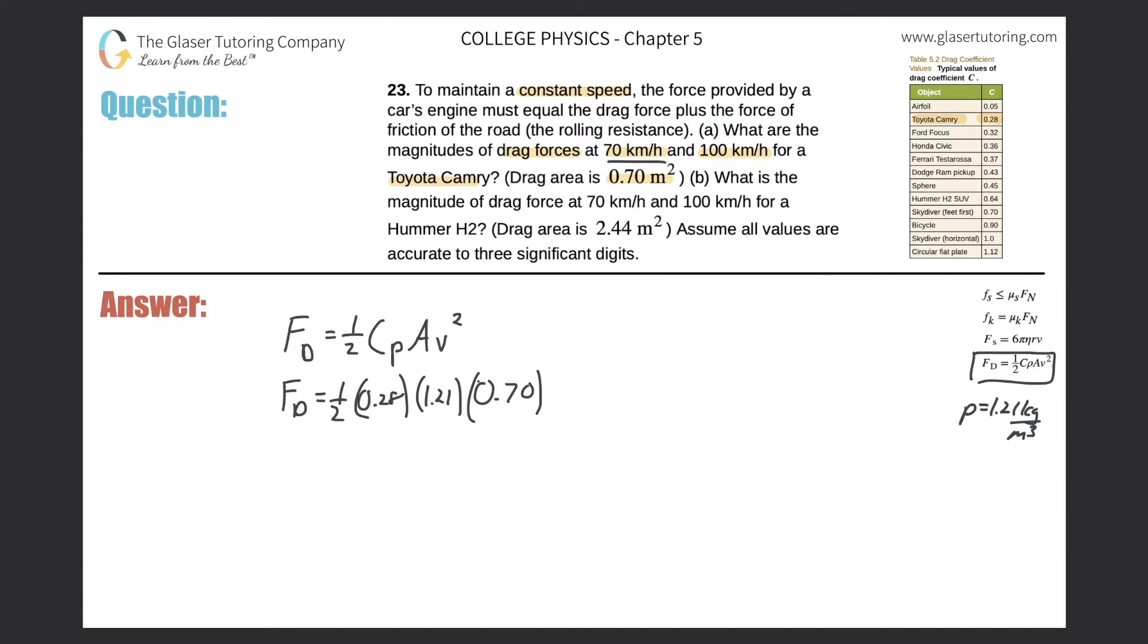The velocity they gave us in kilometers per hour, but we need meters per second in order to put it into the formula. Let's do a quick conversion. We got 70 kilometers per hour: thousand meters in one kilometer, and there are 3600 seconds in an hour. That'll save you an extra step. So 70 times 1000 divided by 3600: 19.4 meters per second.